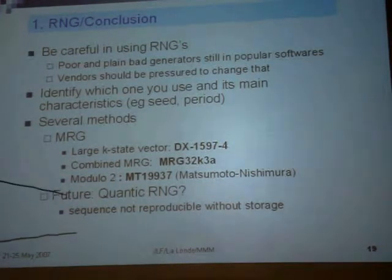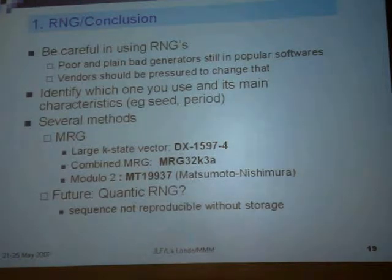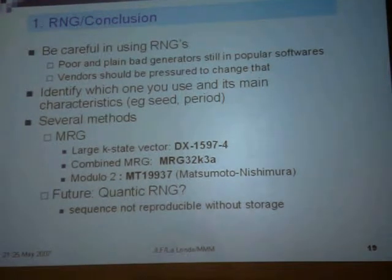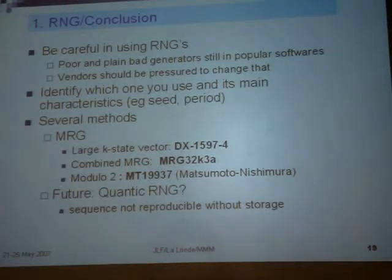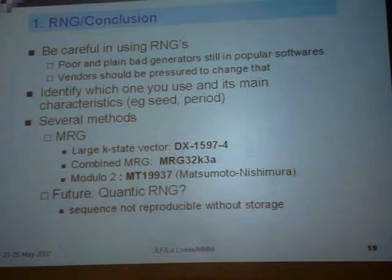A lot of software has the Lemmer generator — the Lemmer 7 to the power of 5, modulo 2 to the 41 minus 1. It's still in use in many programs, so you have to check it. For instance, the one in Excel is not recommended. In MATLAB, it was not a good one either, though we will now use MATLAB as a good generator.